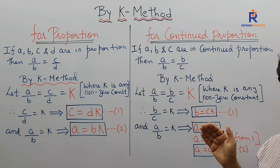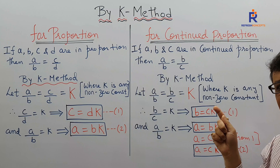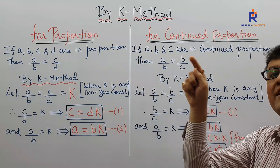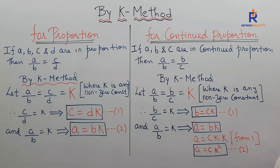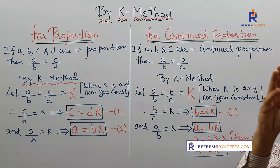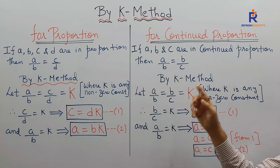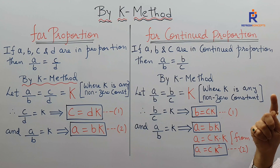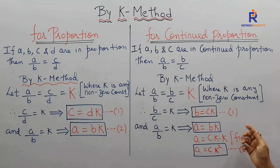Then the middle value: B by C equals K, so B equals CK. But C is already DK, so B equals DK². Likewise, A equals DK³. So if there are four terms, the highest degree of K is three; five terms, highest degree is four. Every term is expressed in terms of the last term — here D — and the degree of K increases for each step leftward.